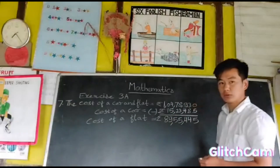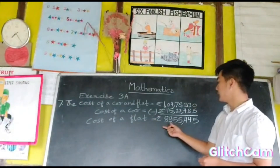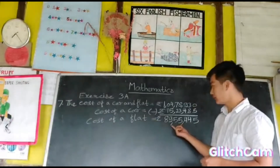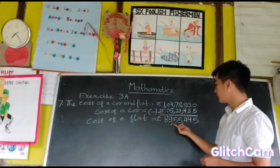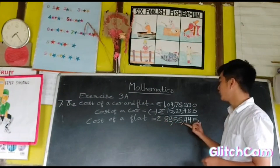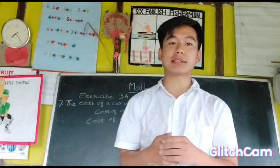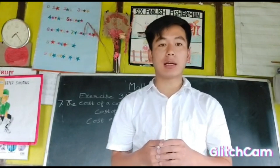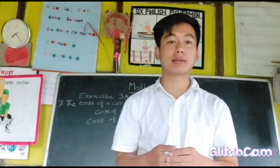So the cost of the flat is eighty nine lakh fifty five thousand four hundred and forty rupees. Please do question number 6 and 7 in your copy, and the remaining questions we will do in the next class. Thank you.